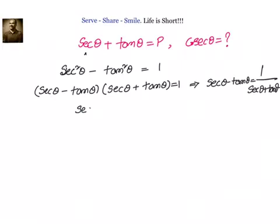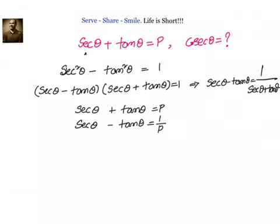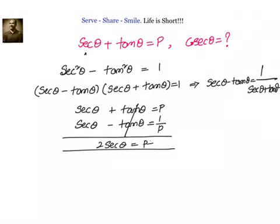Since secant theta plus tan theta equals p, secant theta minus tan theta will be 1 over p, which is the reciprocal. Now there are two ways of doing it. The first way: we will add these two equations to get 2 secant theta, so secant theta equals p plus 1 over p, all divided by 2.